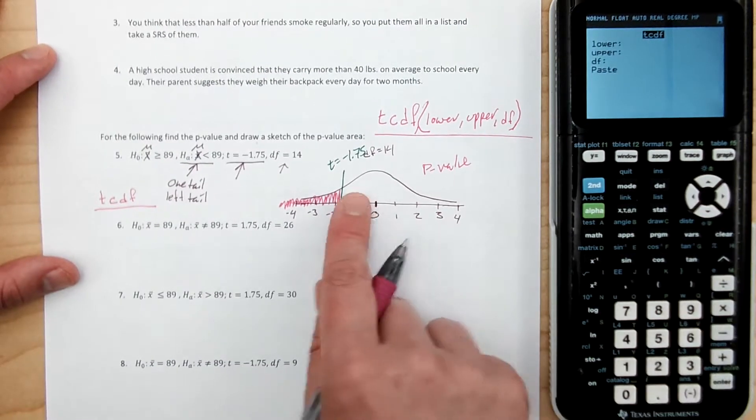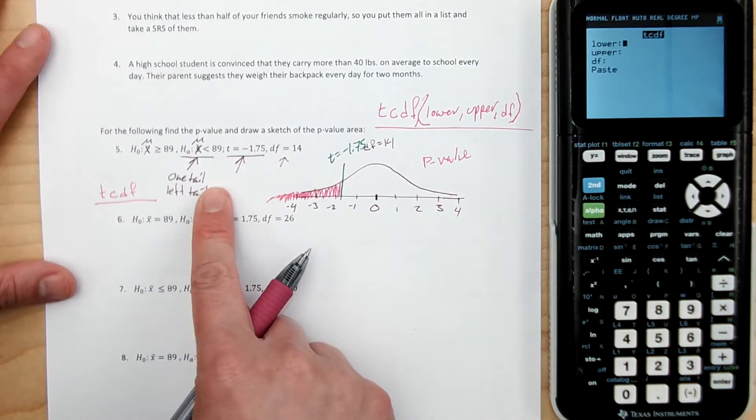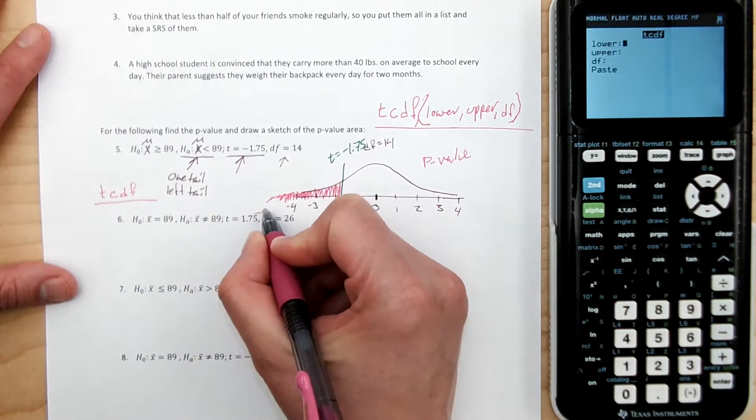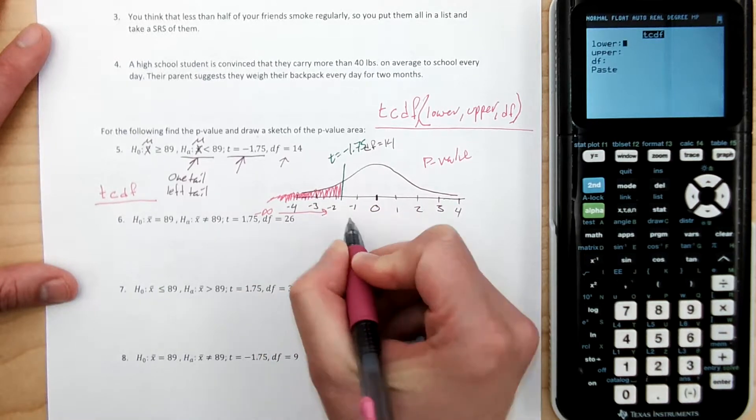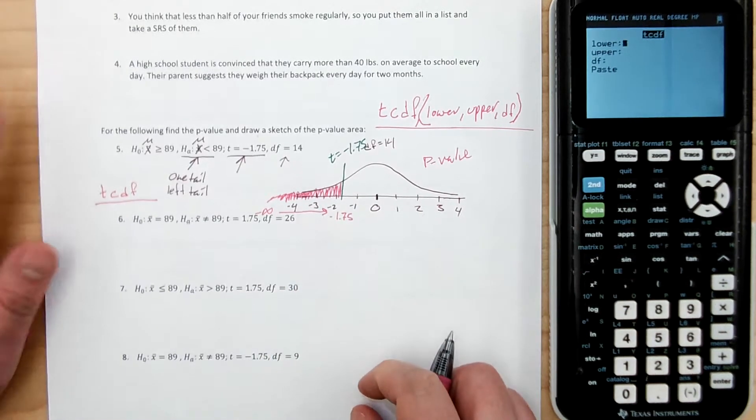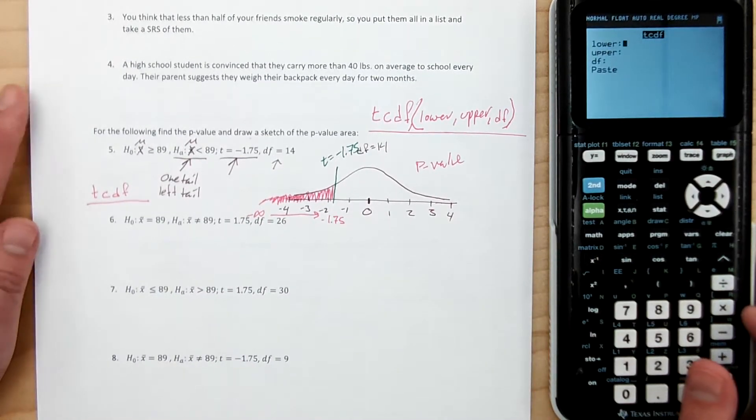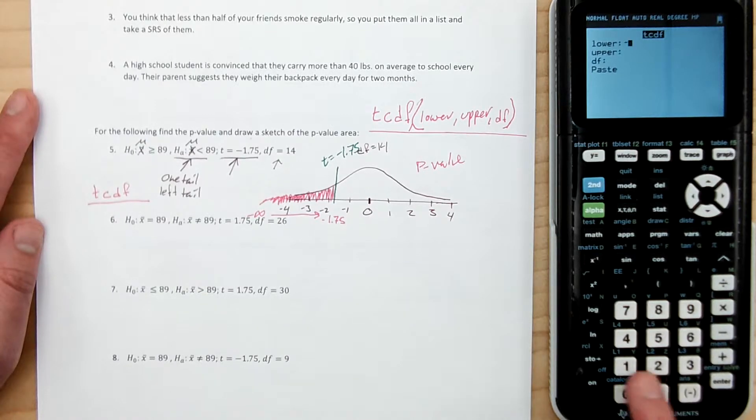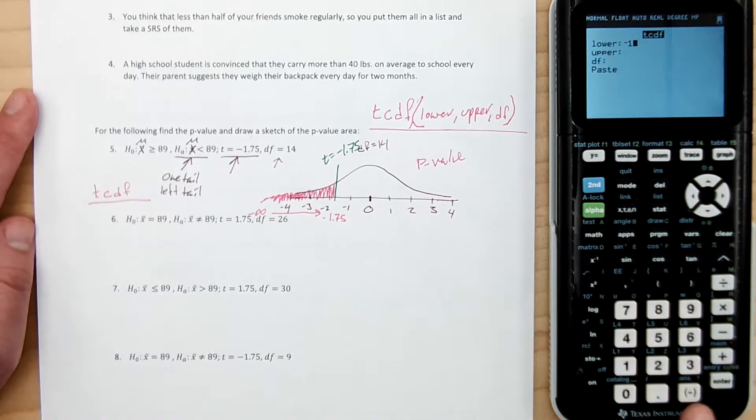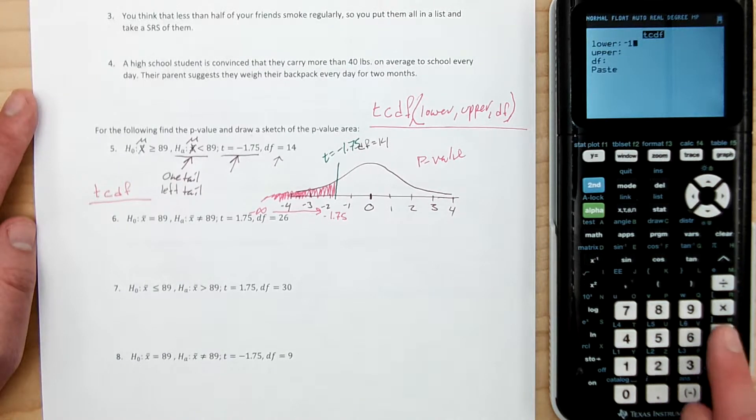Now, I'm just trying to do a whole one-tail. And so you notice what I'd like to do is I'd like to go from negative infinity all the way up to negative 1.75. Well, your calculator can't go all the way to negative infinity, but what it can do is essentially negative infinity. I'm going to say negative 1E99 for negative infinity, and make sure that you're pressing the negative and not the minus.